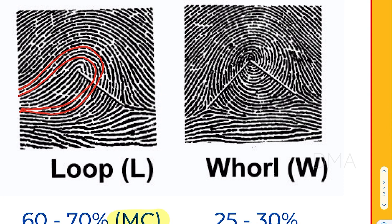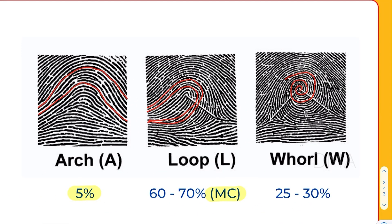As the name suggests, in the whorl pattern the ridge starts from an outward point and it spirals towards the center, making it look like a whorl — and hence the name whorl fingerprint pattern. This can be seen in roughly 25 to 30 percent of the population.